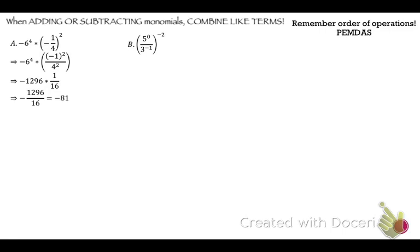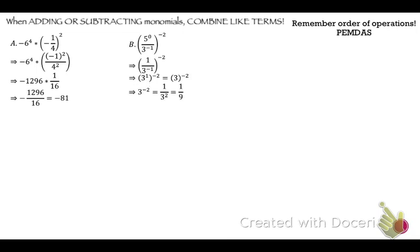Let's do this one. Order of operations — parentheses first. Simplify inside the parentheses: anything to the 0 power is 1, so that 5 to the 0 just becomes 1. That negative exponent — remember, you want positive exponents, so that's going to flip up to the top and become 3 to the 1st power. 3 to the 1st power is just 3. So now we have 3 to the negative 2nd power, which flips down to the bottom: 1 over 3 squared, which is 1 over 9.